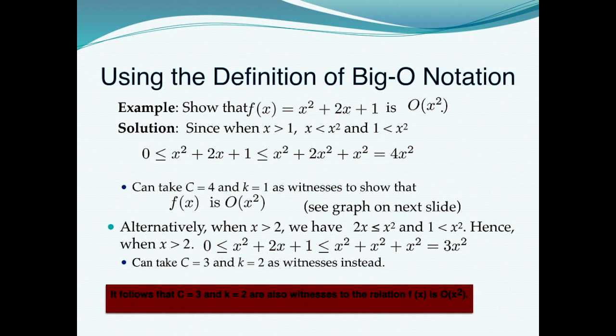Let us take an example. Suppose f(x) = x² + 2x + 1. That function can be described as O(x²). Why? Because for x ≥ 0, the function is greater than or equal to zero. If x = 0 the result is 1, which is greater than zero. Substituting, you find the function behaves like x² + 2x² + x² = 4x².